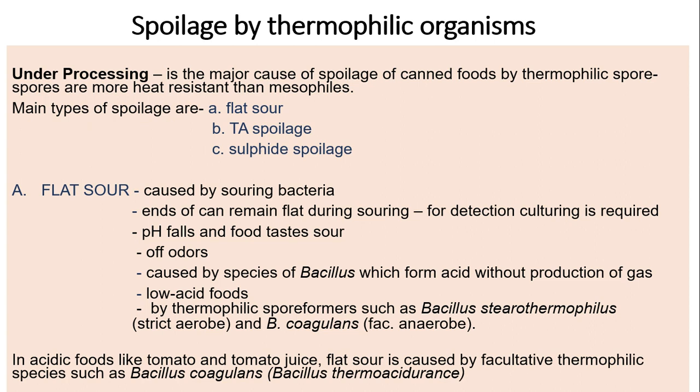Spoilage by thermophilic organisms: spores of thermophiles are more heat-resistant than mesophiles. The main types of spoilage caused by thermophilic organisms are flat sour, TA spoilage, and sulfide spoilage.